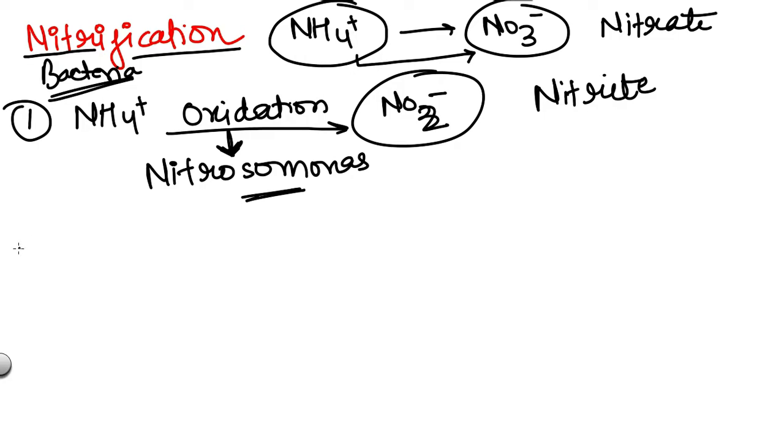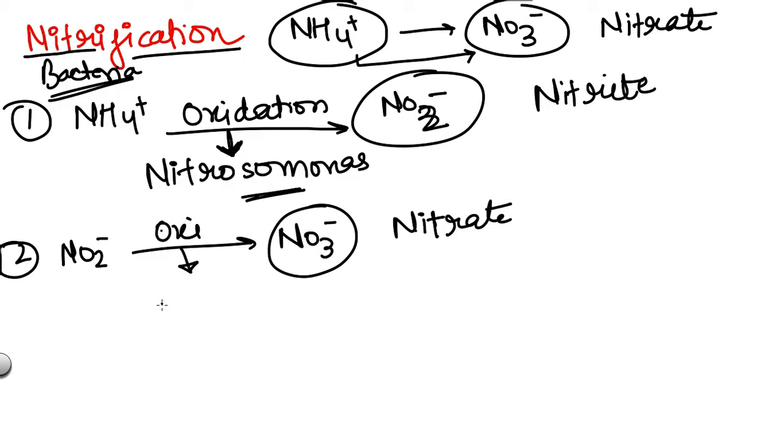During the second stage again the oxidation process will take place and nitrite will be oxidized into NO3-. So ultimately we are getting nitrate ion. This oxidation is also performed by a type of bacteria which is called nitrobacter.